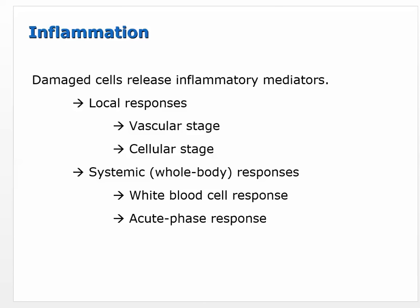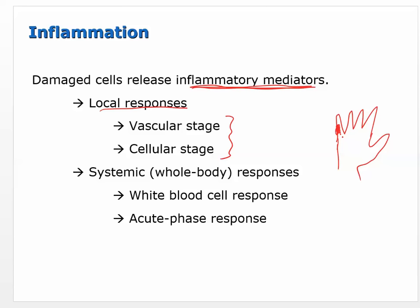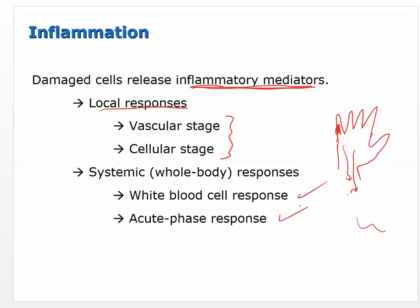Damaged cells release inflammatory mediators — we'll define these as cytokines for the most part, but also things like histamine and prostaglandins. Your book divides the local response into a vascular stage and a cellular stage. We'll go through those in order and then talk about the systemic response. If you hurt your finger, you want to keep it local to begin with. However, if it becomes too bad, like a serious infection, it can trigger a systemic response involving white blood cells.